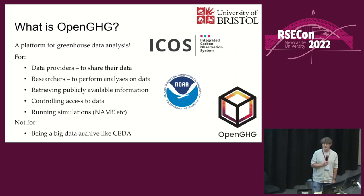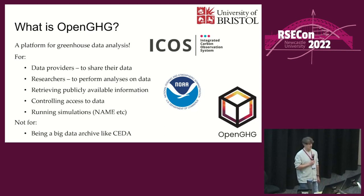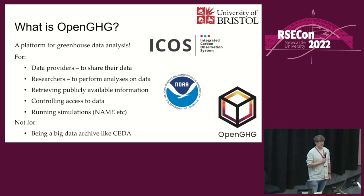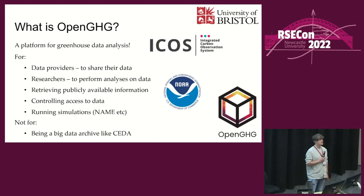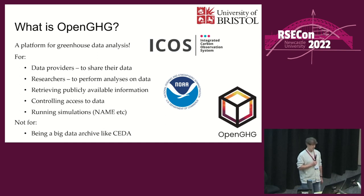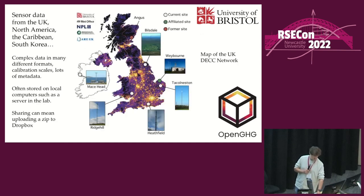It's for data providers to share their data and researchers to run analyses on data - different workflows they'd use, probably using Jupyter notebooks. It pulls public information from different sources such as the ICOS Carbon Portal and NOAA where they put out a big pack of data called NOAA ObsPack. It handles controlling access to data - say if someone wants to give specific people access. We're also hoping at some point to allow people to run simulations on a cluster, cloud instance, or HPC. It's not meant to be a big data archive like CEDA - we don't want to be hosting petabytes because it's really expensive.